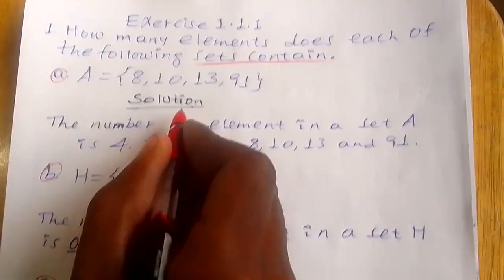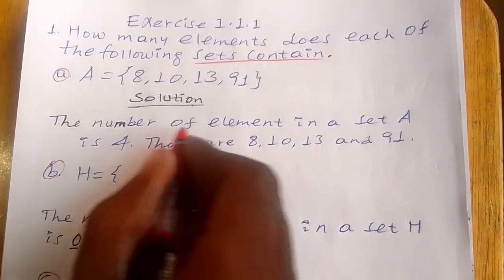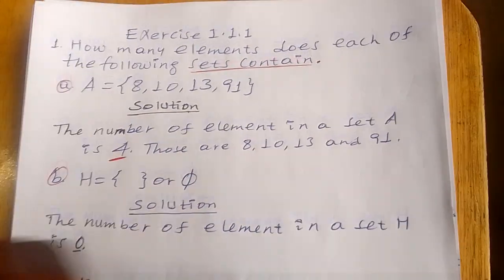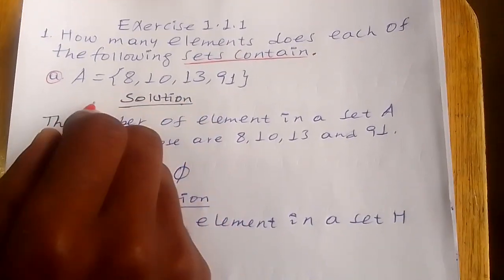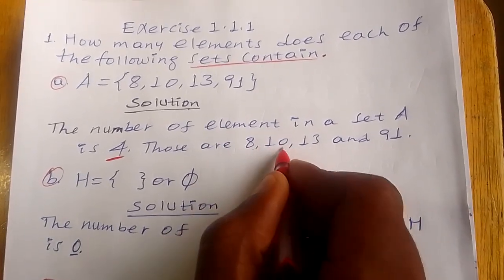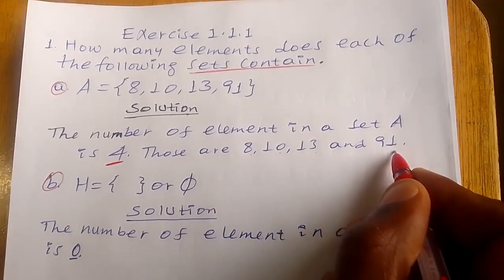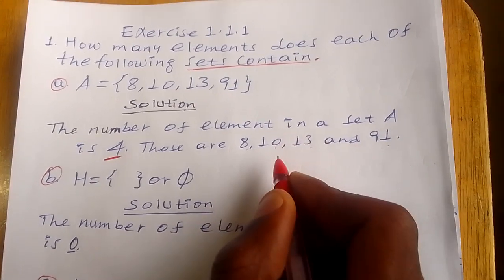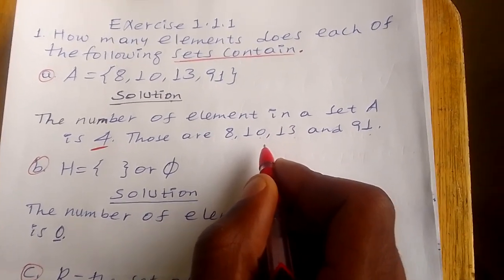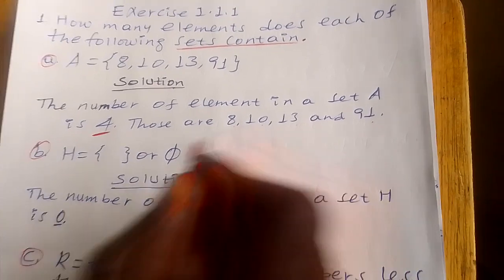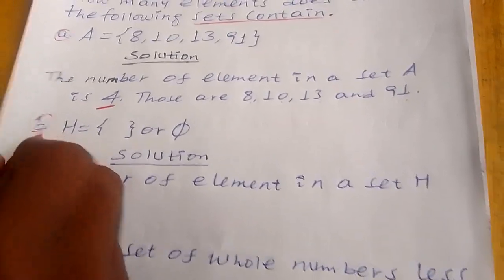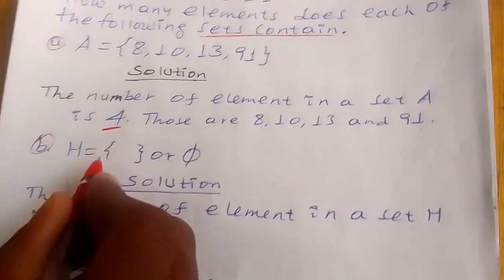Solution: the number of elements in set A is 4. Those elements are 8, 10, 13, and 91. So the number of elements in set A contains 4 elements.